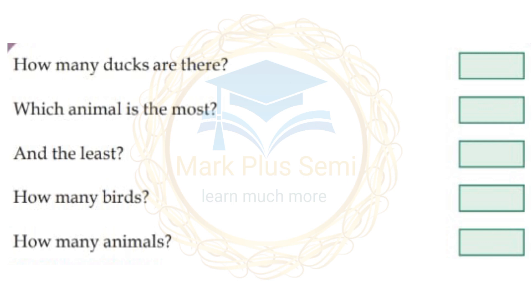There are 2 ducks. Which animal is the most? Goats. And which is the least? Ducks.